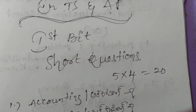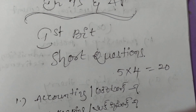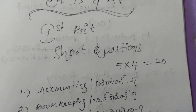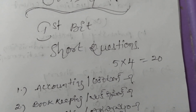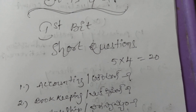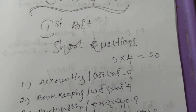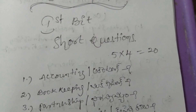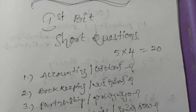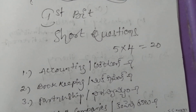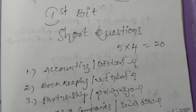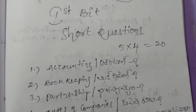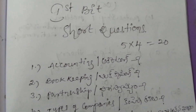We have 2 bits. In the first bit: Short Problems and Short Questions. In the second bit: Long Problems and Long Theory Questions. In the very short bit, 5 questions at 4 marks each equals 20 marks.